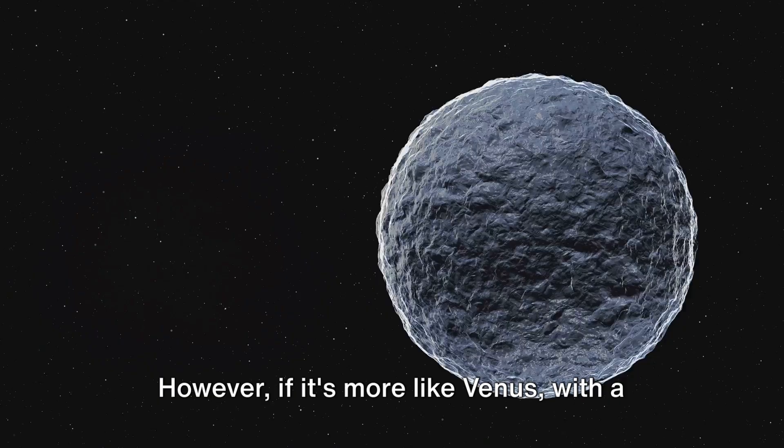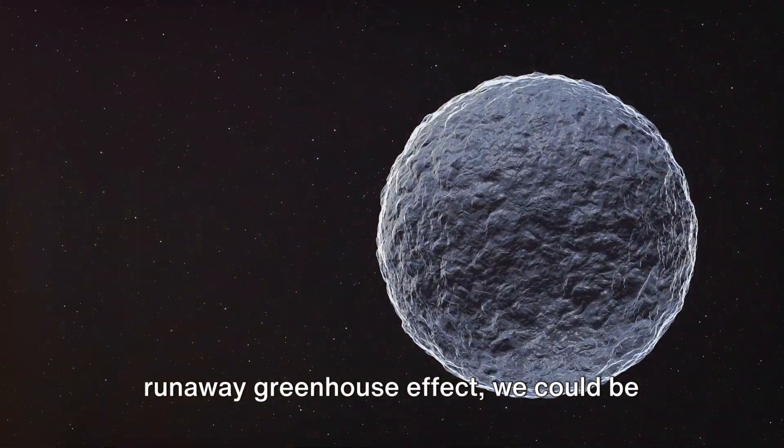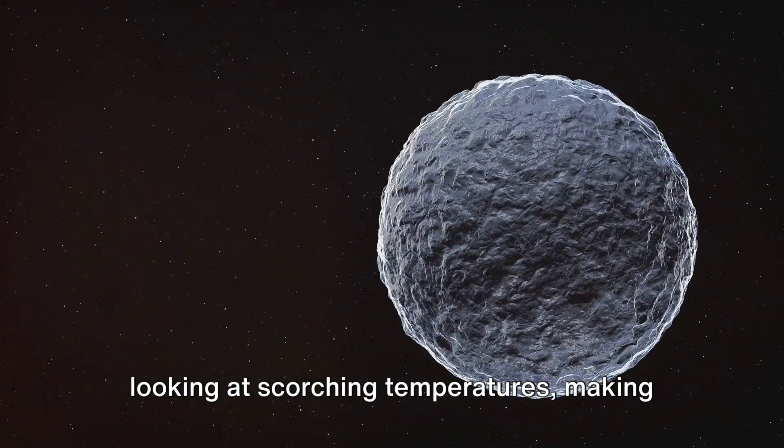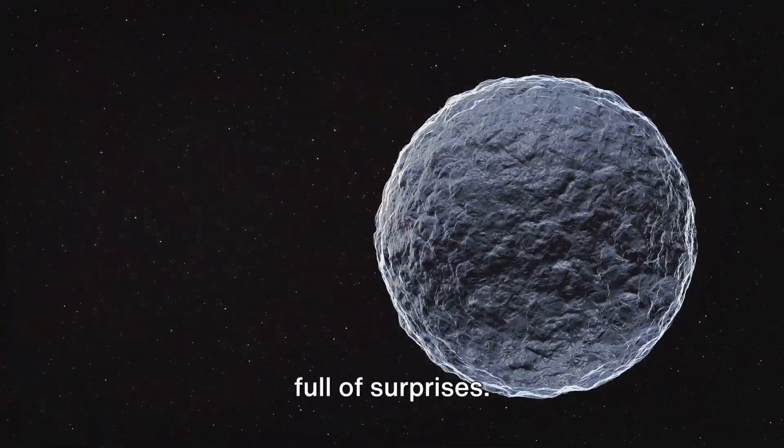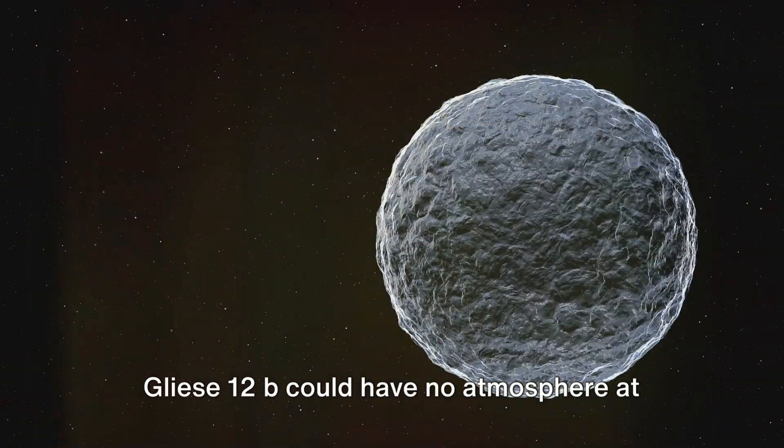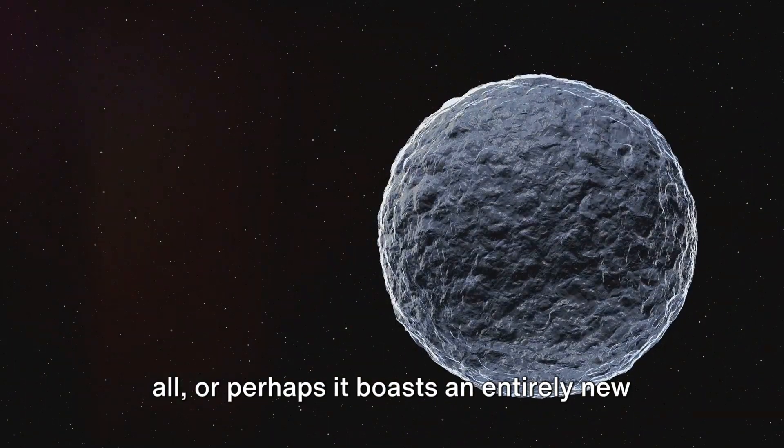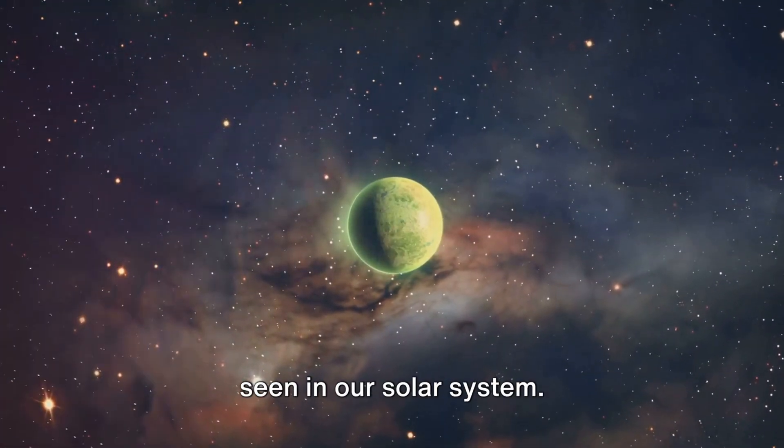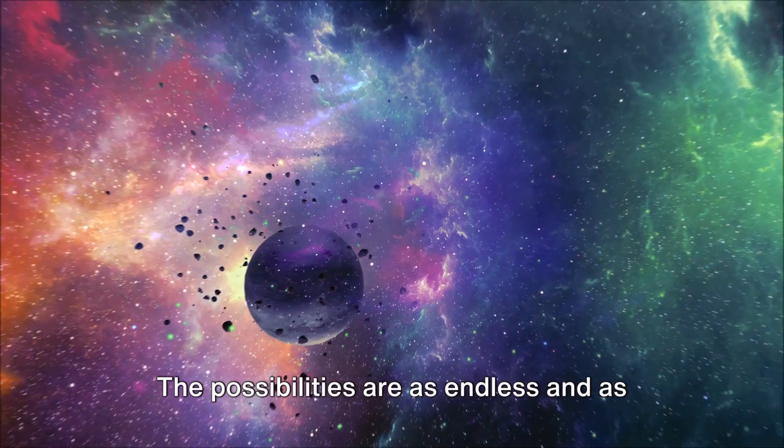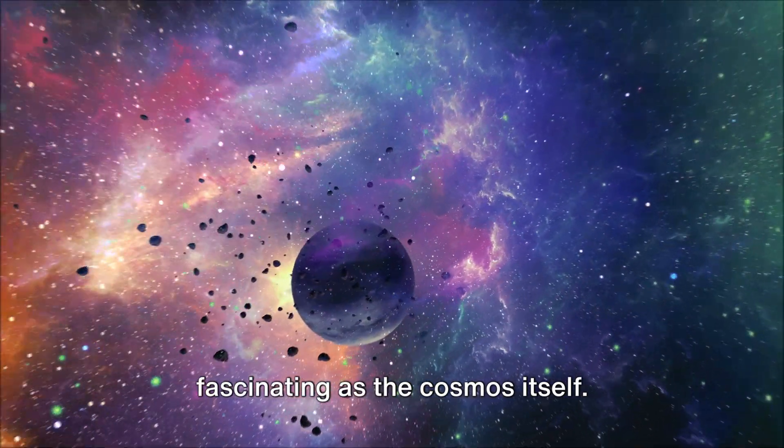However, if it's more like Venus, with a runaway greenhouse effect, we could be looking at scorching temperatures making it less hospitable. But let's not forget the universe is full of surprises. Gliese 12b could have no atmosphere at all, or perhaps it boasts an entirely new kind of atmosphere, unlike anything we've seen in our solar system. The possibilities are as endless and fascinating as the cosmos itself.